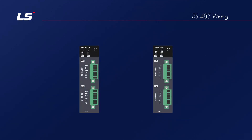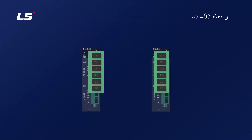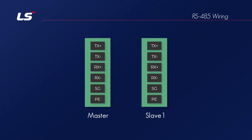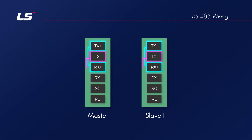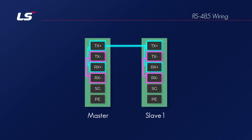RS-485 is a half-duplex communication method that wires transmission and reception lines together. When performing one-to-one communication via RS-485, TX+ and RX+ must be connected to each other, and RX- and TX- must be connected to each other. This creates TRX+ and TRX- lines. TRX+ on the master is connected to TRX+ on the slave side. The signal ground SG and frame ground PE should also be connected one-to-one.